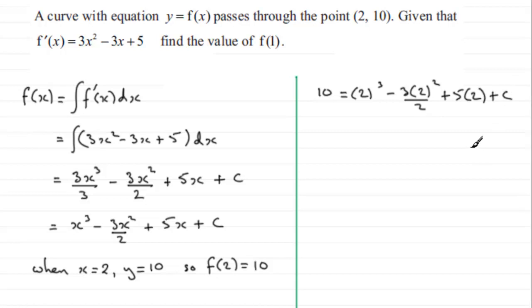So if we work this out, we therefore have 10 equals... 2³ is 8, and then we've got 3 times 4 here, which is 12 divided by 2 is 6, so we're going to have -6 + 10 + the constant C. So 8 - 6 is going to leave us with 2, plus 10 is 12.